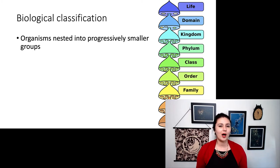And you can see here, the biggest section here is life. Everything fits within life. Next, we have a domain, then kingdom, phylum, class, order, family, genus, and species is the smallest level here.